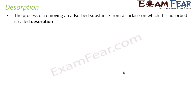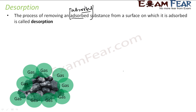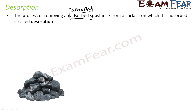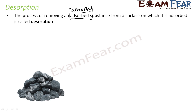Desorption is used for the process of removing adsorbed substance — for both adsorbed and absorbed, there is a standard definition. As told, charcoal adsorbs gas. If you want to remove this, you heat the charcoal and the gas is removed. So whether it is hydrogen gas, chlorine gas, or any other gas on the charcoal — you heat the charcoal, the gas is removed. This process is called desorption.